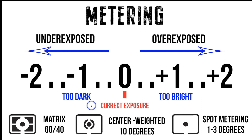Center-weighted allows you to put the meter on a specific area and try to get an accurate exposure for that very specific location. For example, if half of your frame was lit with light and the other half was dark, you could place this on the lit side to isolate the meter and get a more accurate representation of your exposure. Same with spot metering — it's a more narrow point that allows you to meter a very specific area. Honestly, I don't know how much people actually change the metering modes anymore.